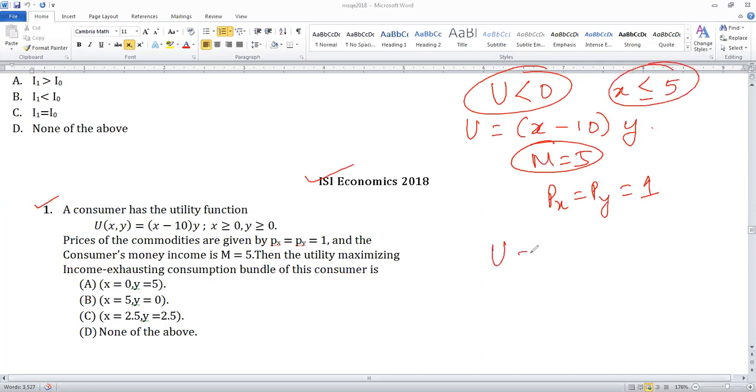The best that I can do is utility is equal to 0 when y is equal to 0. Y is equal to 0, x is equal to 5, if I have to exhaust my entire money income.